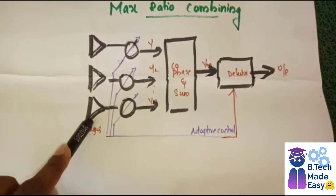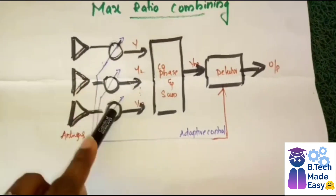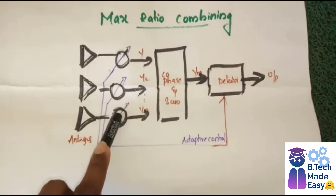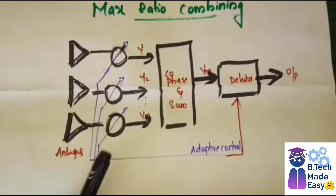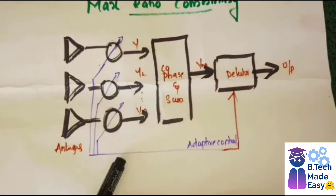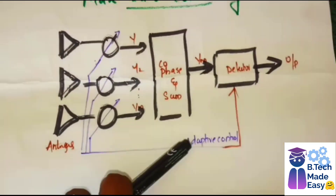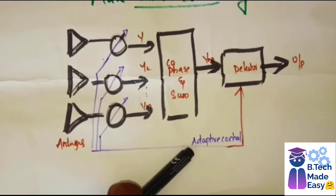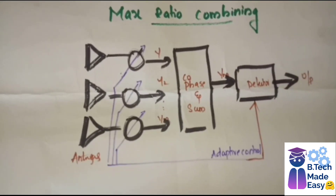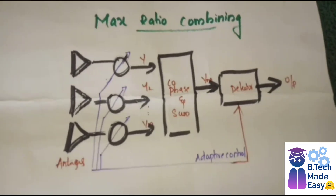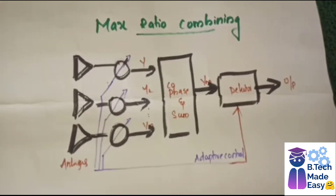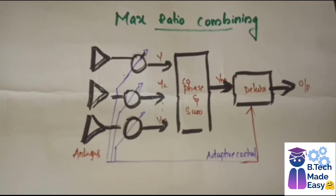In maximum ratio combining (MRC), many antennas are used with variable gains. These variable gains can be adjusted using adaptive control. The advantage is that the individual SNRs are summed together and the total SNR is produced as the output.